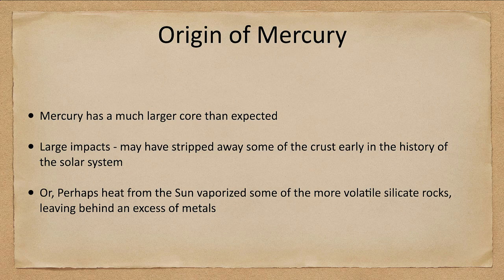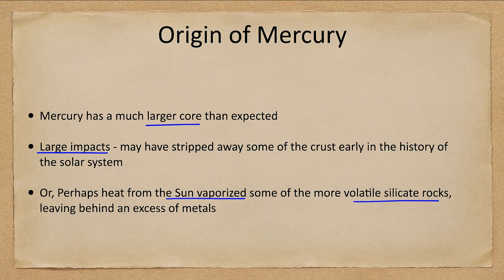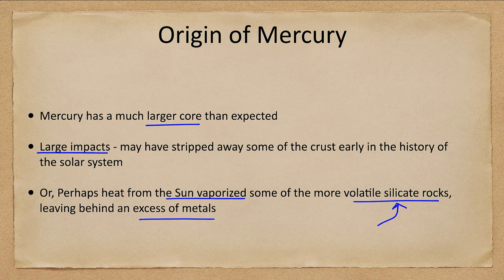Where did Mercury come from? Mercury has a much larger core than expected, and it's quite possible that large impacts stripped away some of the crust in the early history of the solar system. We would expect Mercury to have more metallic material, but it should also have had more rock than we see. Maybe some of that was stripped away by a massive impact — such as the one that formed our Moon — or maybe excess heat from the Sun vaporized some of the more volatile rocks. Silicate rocks could have been vaporized, leaving behind an excess of metals. These are still open questions in understanding how Mercury formed.